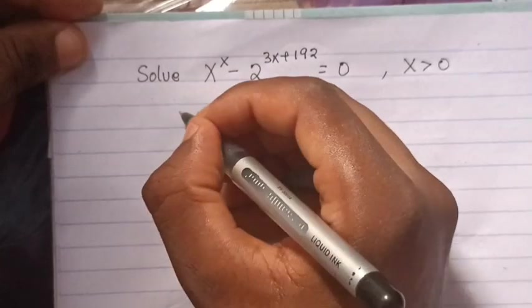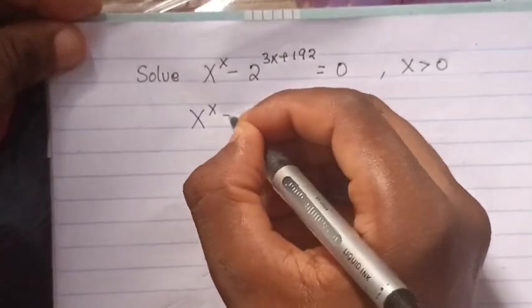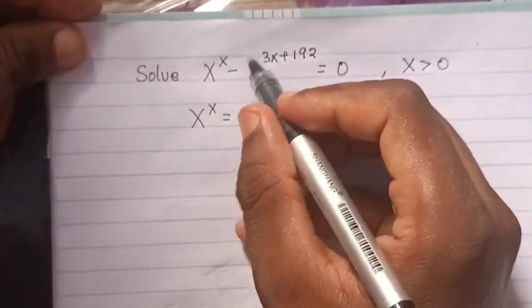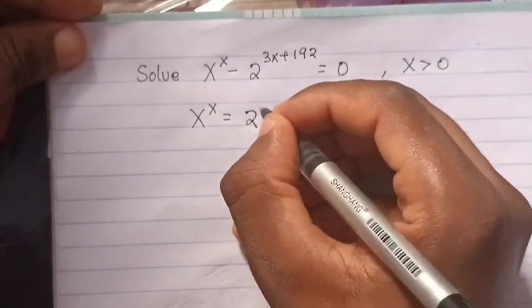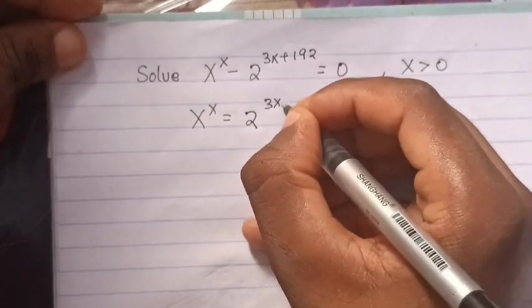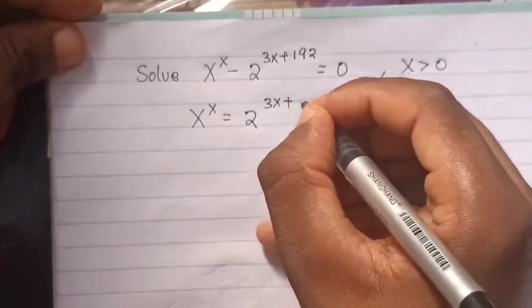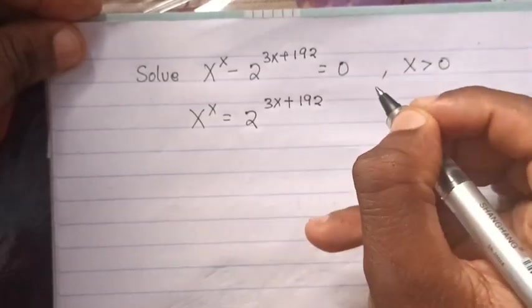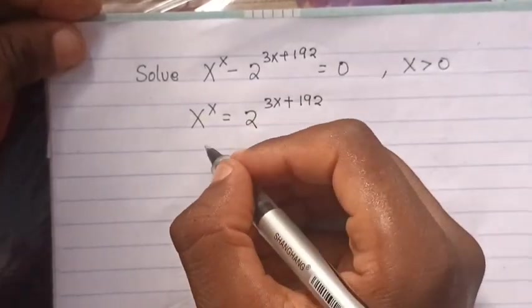Solution: x to the x equals to, this one you bring to this side, it will be 2 to the 3x plus 192.